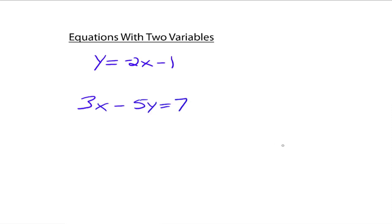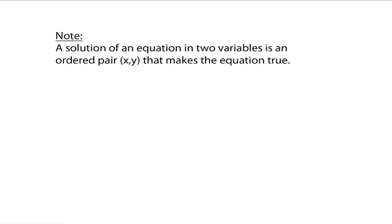You have equations that have two variables in them — usually x and y. For our purposes, it's going to be x and y. A solution of an equation in two variables is an ordered pair (x, y) that makes the equation true.